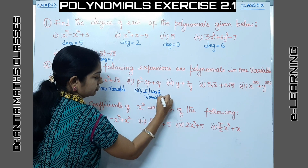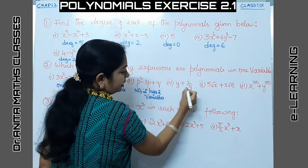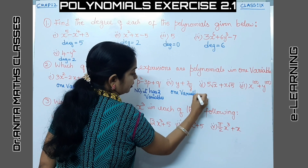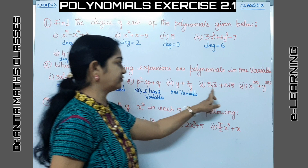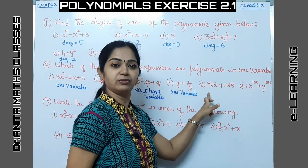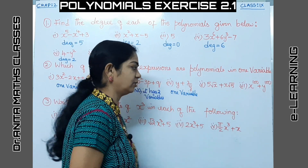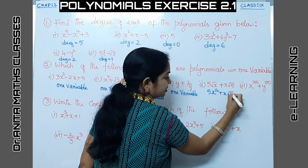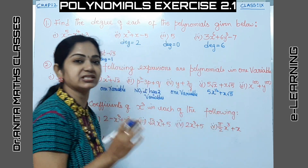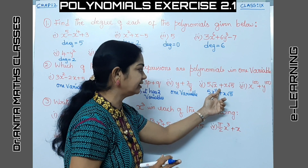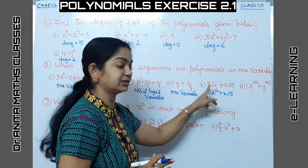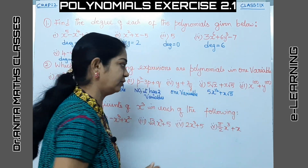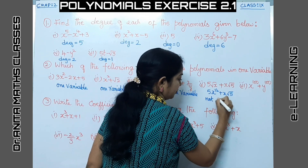Another expression has only y as the variable, so that is a one-variable polynomial. For the fifth one, we have √x, which can be written as x to the power of ½. Since the power is ½, which is a rational number and not a whole number, this is just an algebraic expression — not a polynomial. A polynomial requires the power of the variable to be a whole number.